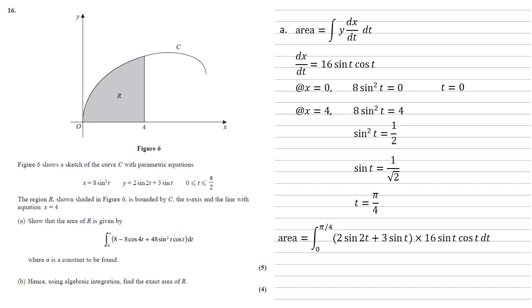Multiplying that bracket out, we get 32 sine 2t sine t cos t plus 48 sine squared t cos t dt.